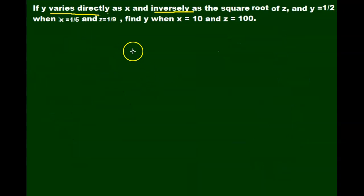Here's another problem. I've changed it up a little bit and changed some of the numbers to fractions. So if y varies directly as x and inversely as the square root of z, and y equals one half when x equals one fifth and z equals one ninth, find y when x equals 10 and z is 100. Again, let's turn our word problem into an equation. So y varies directly, so we can say that y equals k, constant of proportionality, varies directly with x, so it's kx, and inversely with the square root of z.